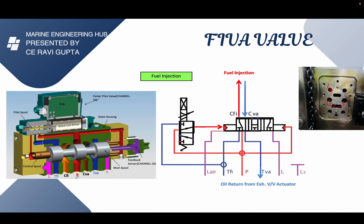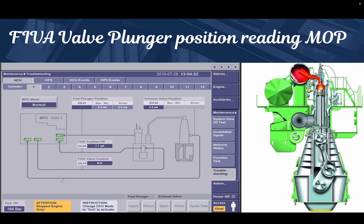P indicates the pressurized servo oil at 200 bar. CVA indicates the pressurized oil going for exhaust valve activation. TVA indicates the used oil after exhaust activation returning back to the system. CFI is the pressurized oil going for fuel oil booster activation. TFI is the used, unpressurized oil after fuel activation returning back to the system.